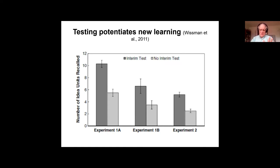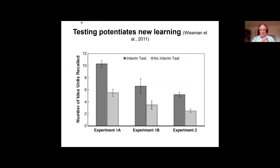Why does this forward testing effect occur? There's still debate, but two reasons stand out. First, if you take a test on preceding material, you have that material more accessible as you read your new assignment, so you're integrating more knowledge with the new material — and we know that helps memory. Second, taking an interim test may reveal to you that you're not learning as well as you thought, causing you to read the subsequent section more actively and effectively. Either way, this is tantalizing for how formative testing could improve classroom learning.